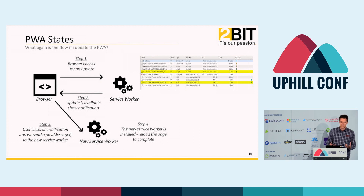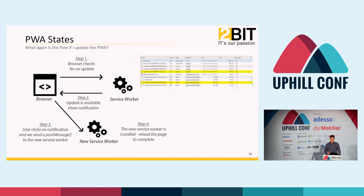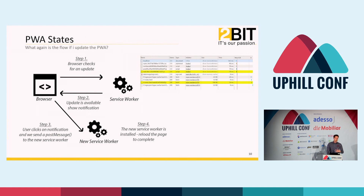The service worker pre-caches the key resources and checks in the background if there is an update available. It will compare the files byte-wise. If the update happens, it only completes if all the changed files can be loaded. So if your PWA consists of a lot of files, it gets more likely that the update will fail. As soon as the service worker is updated, it goes into idle state and waits until you reload the page, then the new service worker goes active. But a regular user won't know there's a new version ready.